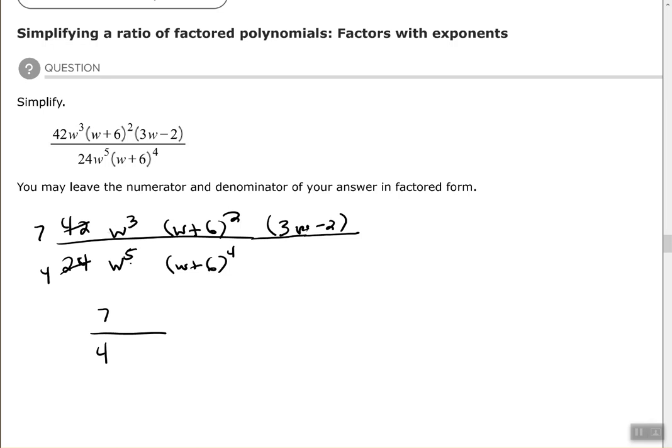And then the monomials, we're going to use our quotient rule for exponents. Subtract 5 from that 3. So 3 minus 5 is negative 2. The binomial is the same thing. They have exponents. We're going to use our quotient rule for exponents again and subtract the 4 from the 2. And then we have that 3W minus 2.